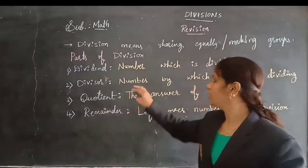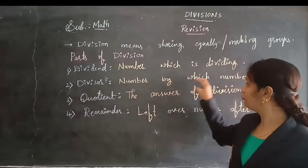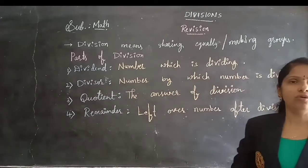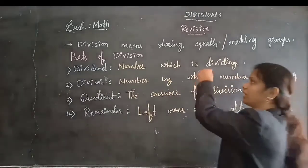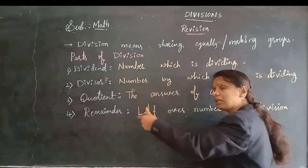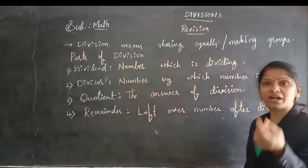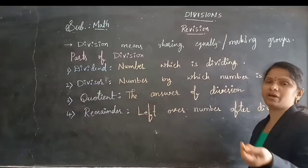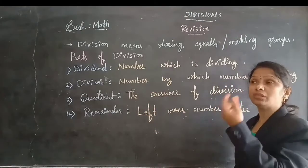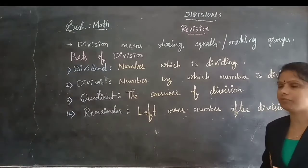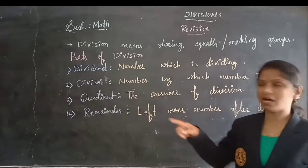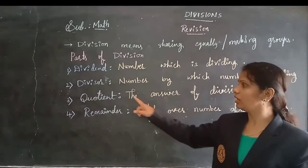And divisor — the number by which the dividend is being divided. Whatever the dividend number we are selecting, we are dividing it with another number. That number — nothing but the table number — can be called the divisor.